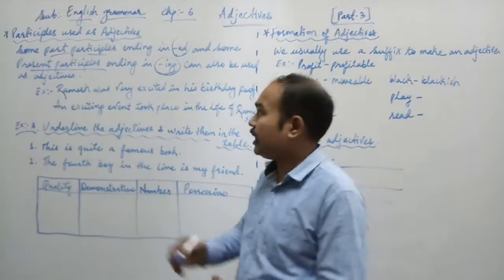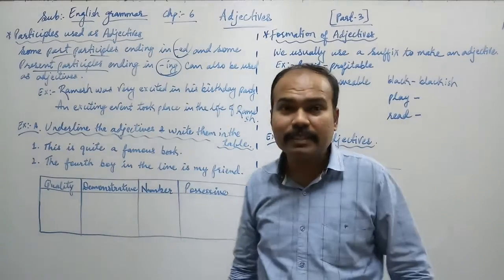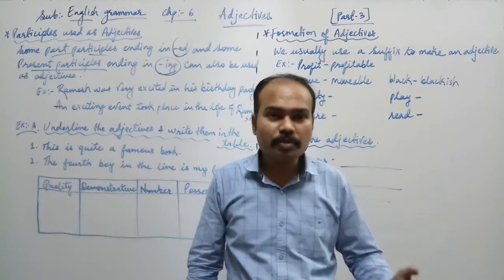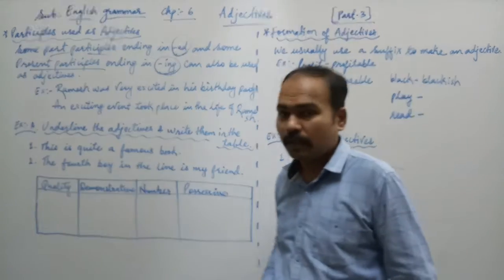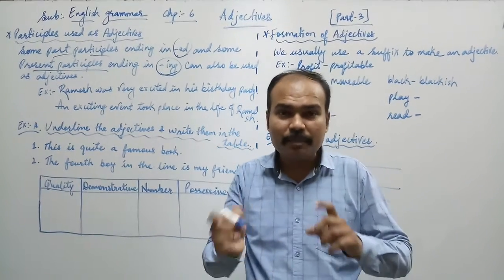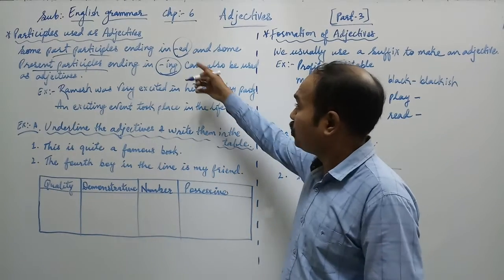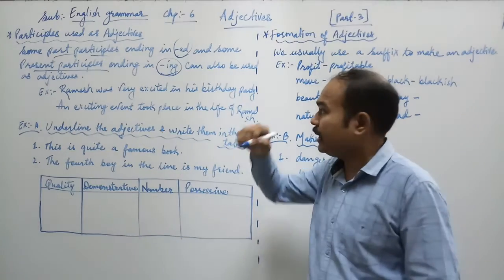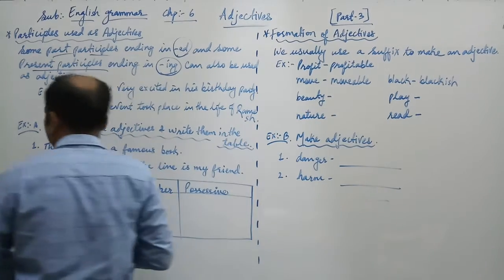Both past participles and present participles, which end in ING, can be used as adjectives. Both the things, the past participles as well as the present participles are used as adjectives. Let us see more with the example.